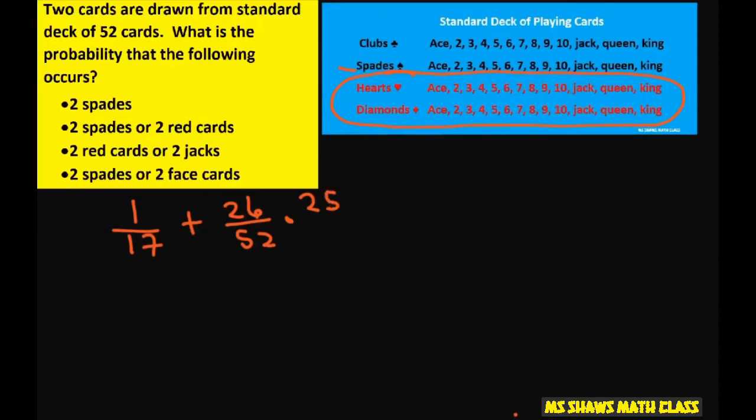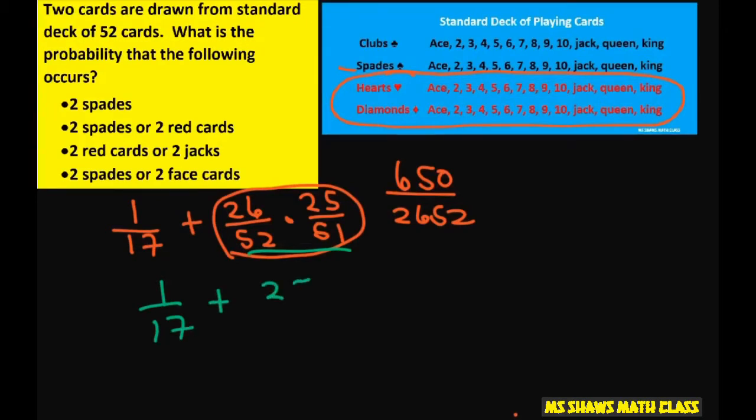And then when you draw the second card, that would be 25 out of 51, and that's going to give you a total of, so this right here, just so you know, is 650 divided by 2652. You just put it in the calculator. This reduces to 1 divided by 17 plus 25 divided by 102, and that's going to end up being 31 divided by 102.